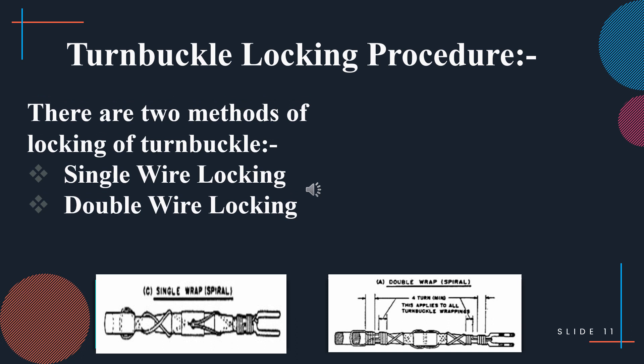The turnbuckle locking procedure is as follows: first, insert the jaw over the eye bolt, then insert the bolt back into the turnbuckle and fasten it tightly. Insert the eye into the open shackle, then close the shackle so the eye is locked into place. There are two methods of locking a turnbuckle: single wire locking and double wire locking.